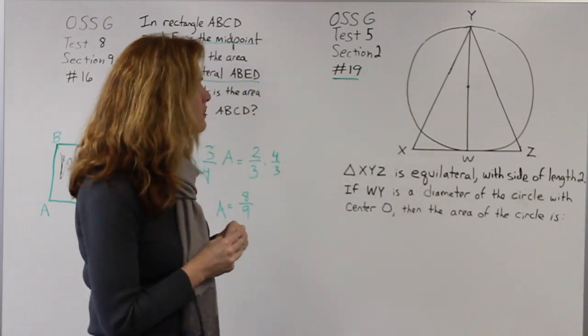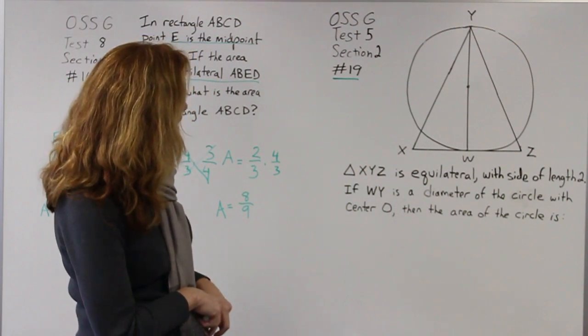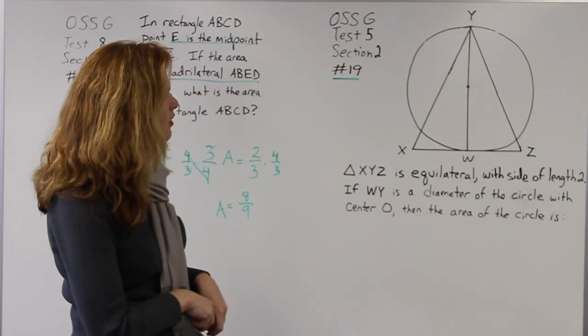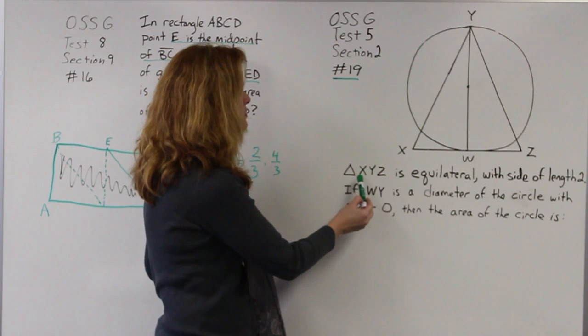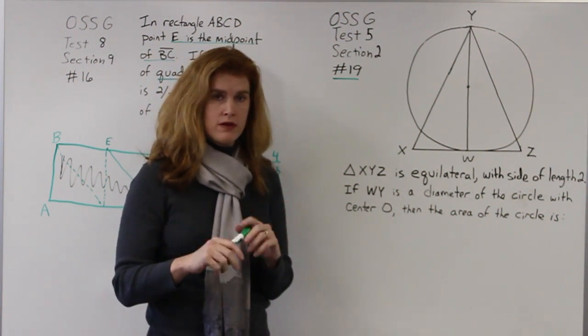So I know that if an answer comes to me really quickly, I shouldn't trust it. I'm looking at the problem and it's giving me a couple of clues. It says triangle XYZ is equilateral. Equilateral is a great word, that's a gift.